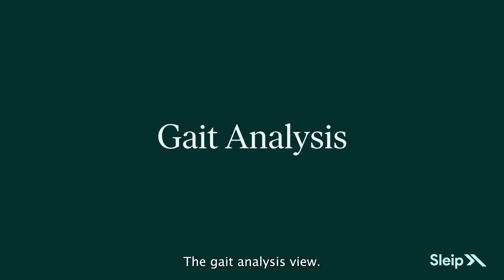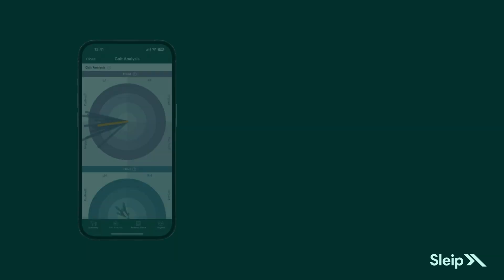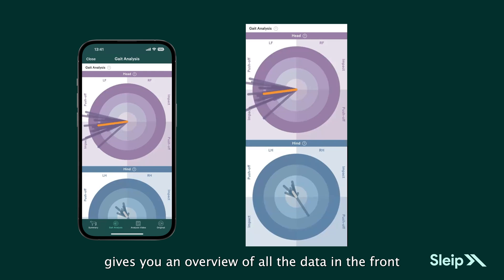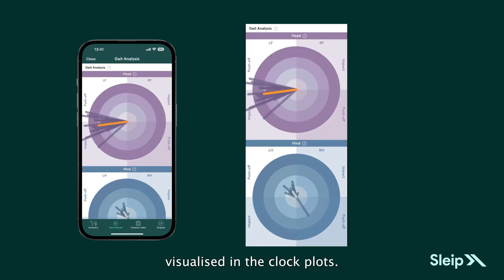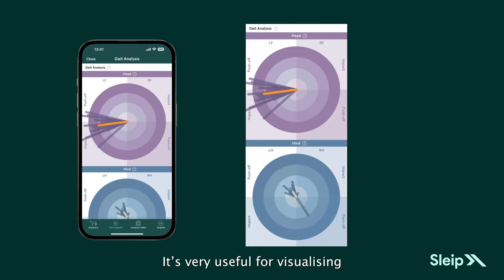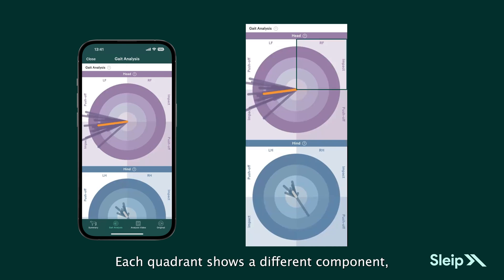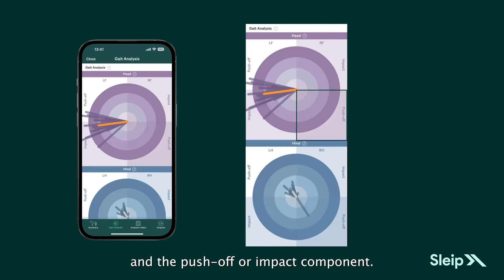The Gait Analysis View gives you an overview of all the data in the front and hind limbs, visualized in clock plots. It's very useful for visualizing the consistency of the asymmetry, which is of clinical importance. Each quadrant shows a different component, indicating the limb and the push-off or impact component.